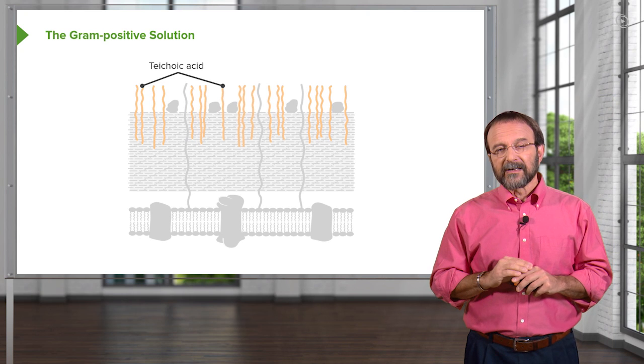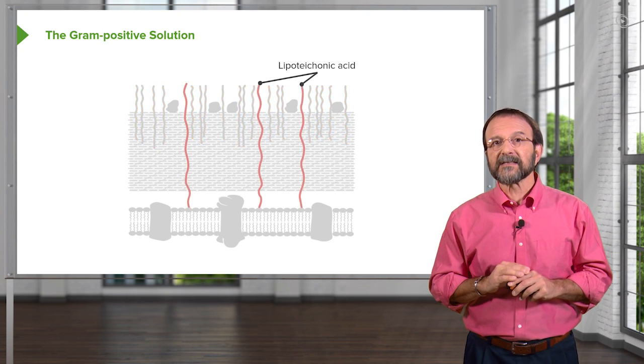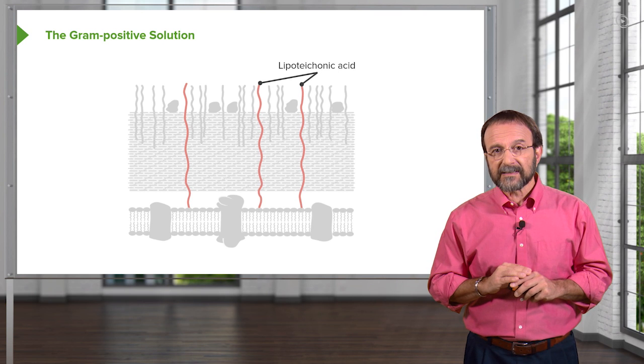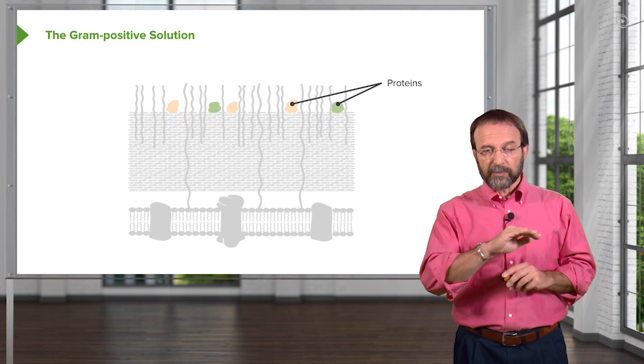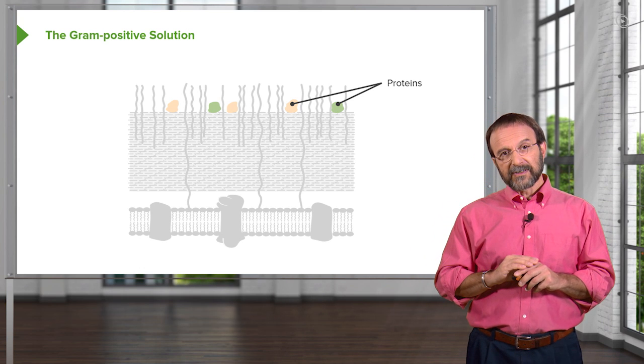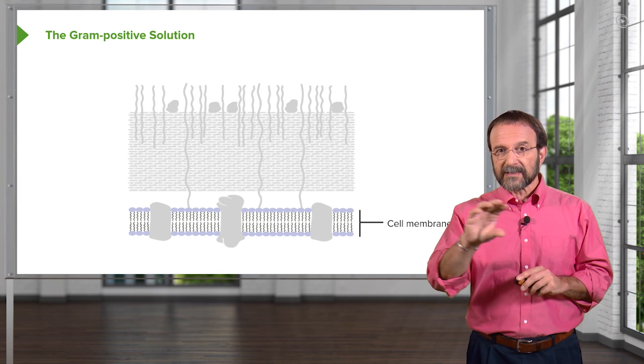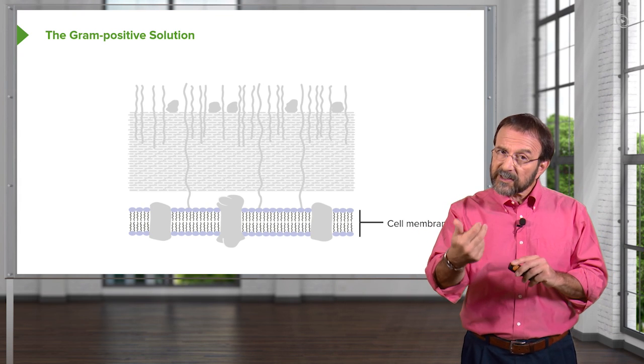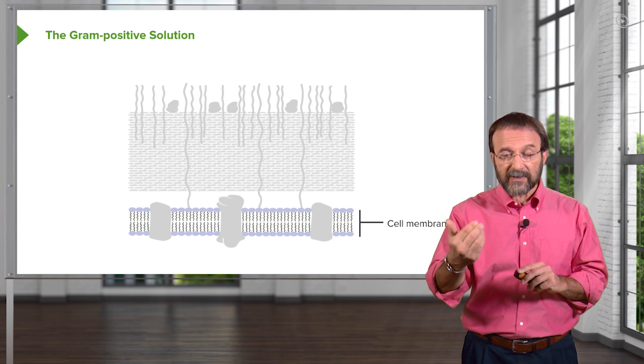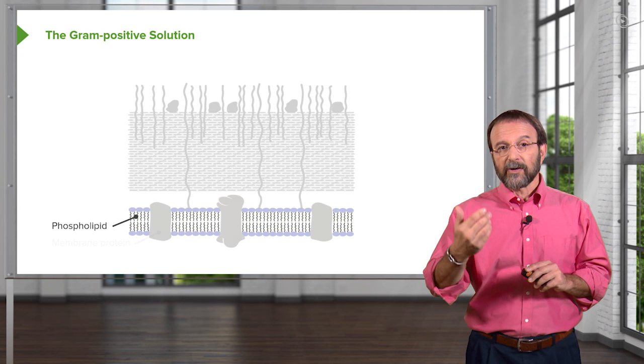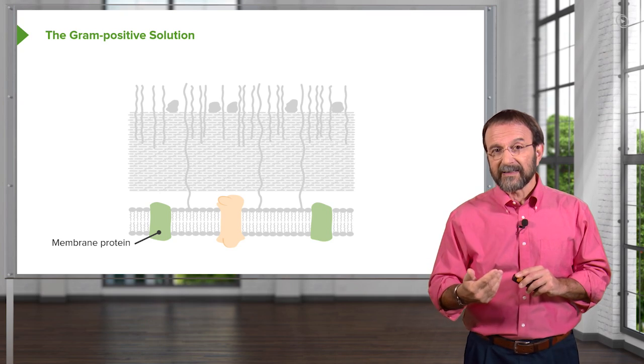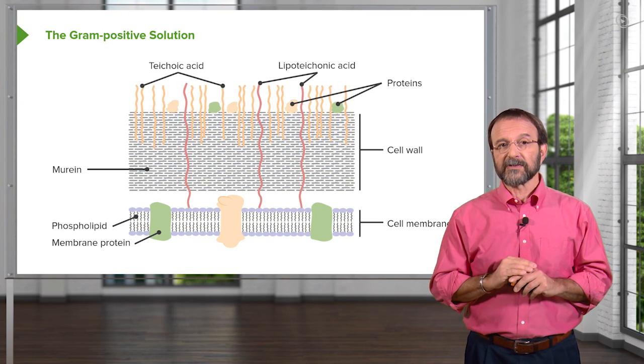Embedded in the murine layer are what we call teichoic acids and lipoteichoic acids. There are also proteins on the outer surface of the peptidoglycan, and of course all this is on top of the cell membrane which is a typical lipid bilayer made of phospholipids. There are proteins that are embedded in this membrane and we'll talk about those functions in a minute.